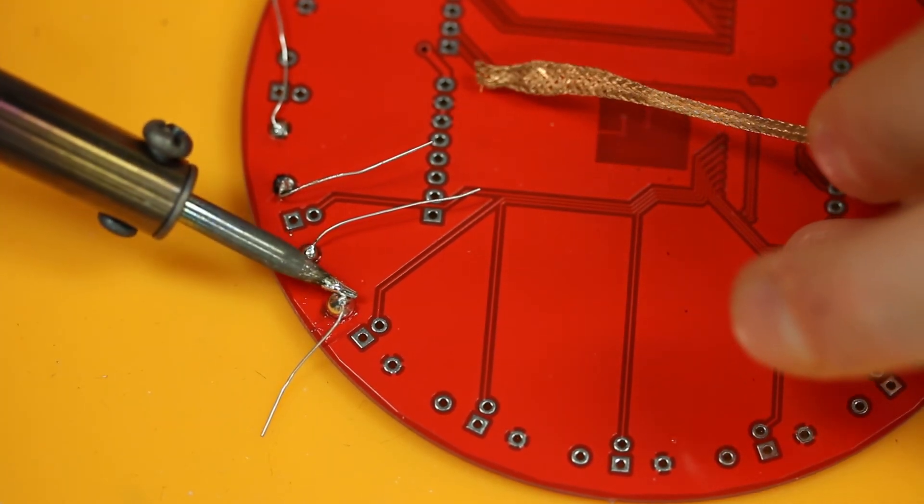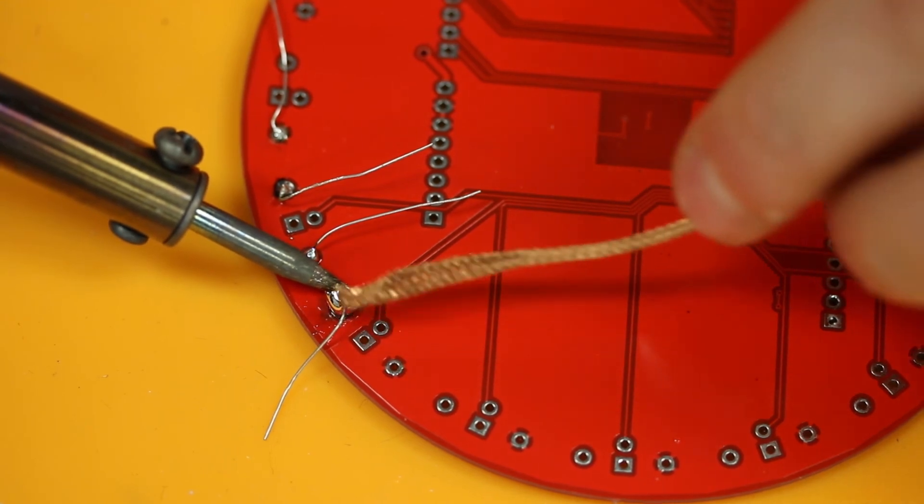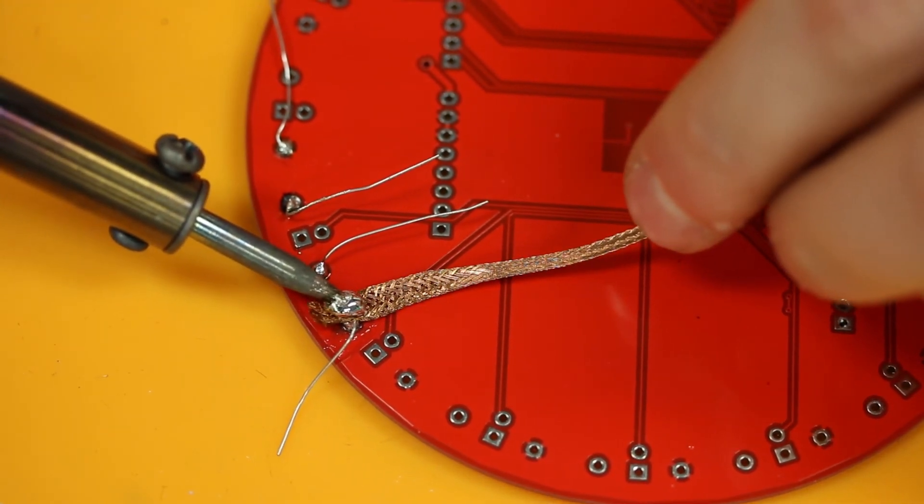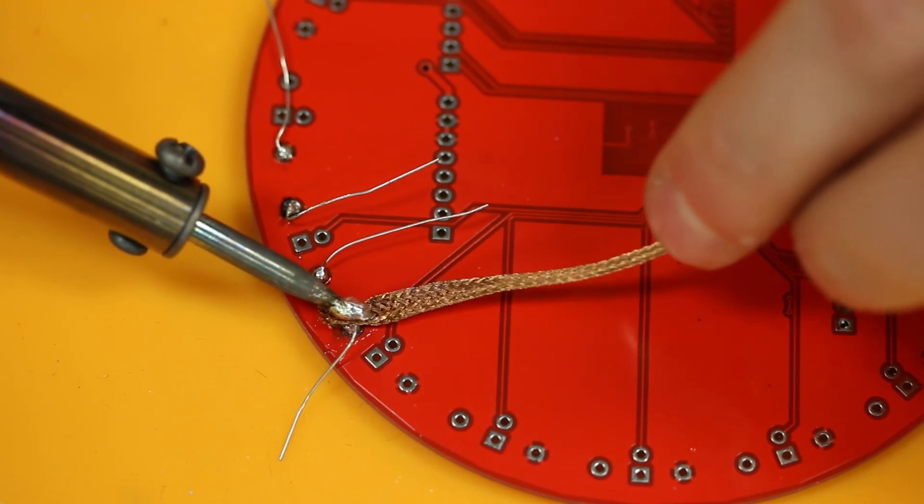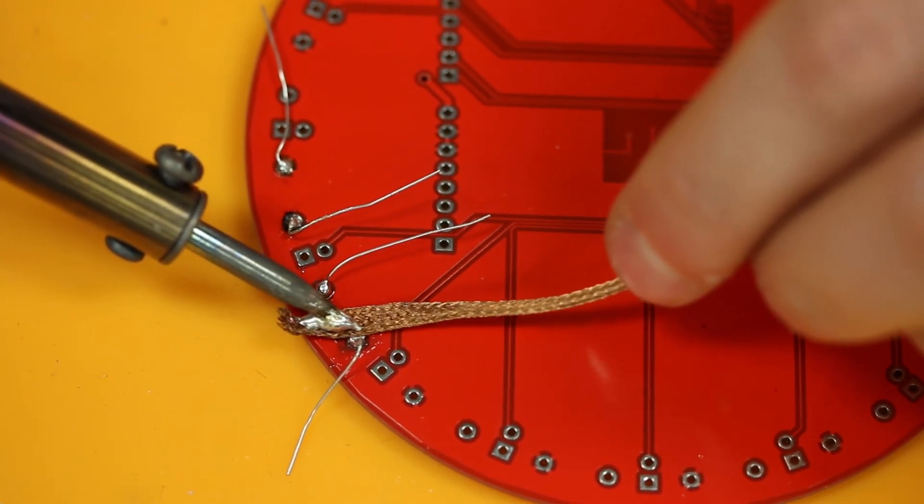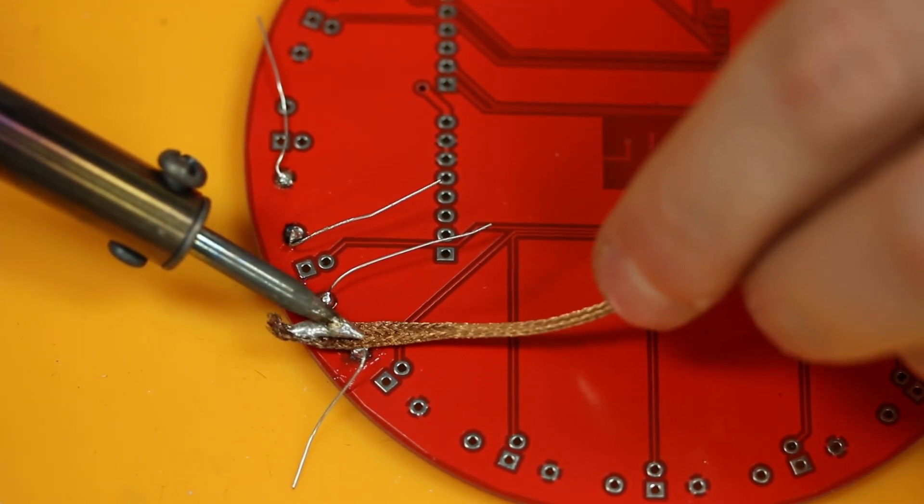And now that it's all molten, we're going to place the solder wick there. And now we're going to heat up the joint with the solder wick and kind of just work it back and forth. And what you're hoping is going to happen is that some of the extra solder is going to bind to the solder wick and not the pad.